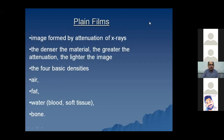First of all, we will discuss the plane films. The plane films are formed by the attenuation of the x-rays. In order to look at any x-ray, there are multiple basic densities which you should remember in order to differentiate one region from the other, or one organ from another on the plane film. These four basic densities are: air, fat, water including blood and soft tissues, and bone.